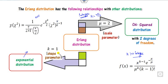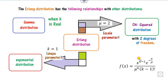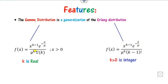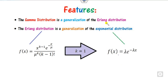If you set K as a real number instead of an integer, then this distribution becomes the gamma distribution, as seen in previous lectures. In the gamma distribution PDF, when K is real, the factorial (K-1)! is replaced by the gamma function. When K is an integer, it is the Erlang distribution; when K is real, it is the gamma distribution. The exponential distribution is a particular case corresponding to K=1.